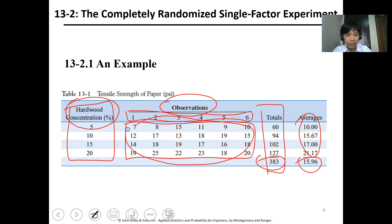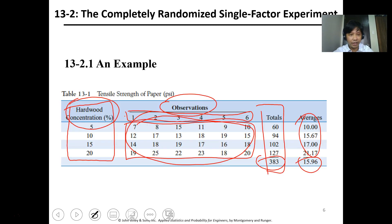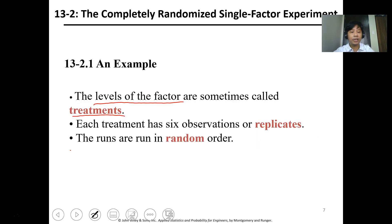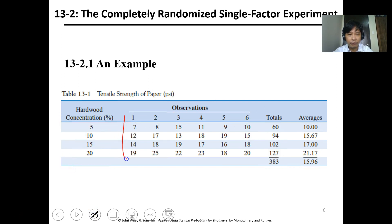In this example, we call the levels of factors treatments. So basically this is treatment 1, treatment 2, treatment 3, treatment 4. Each treatment has six observations, which is the replicate. The number of observations per row or per treatment is what we call the replication of data. Usually, you prepare the sample as a single preparation and divide it into different partitions.